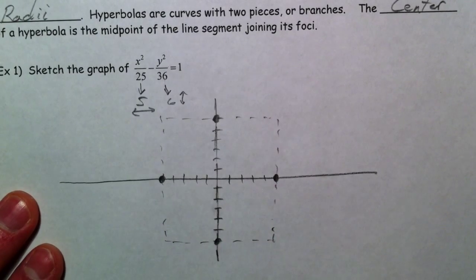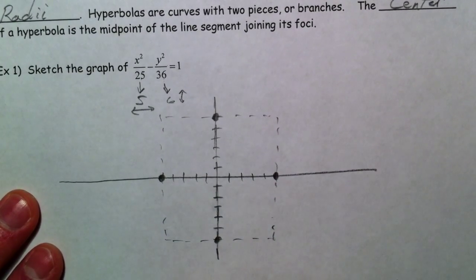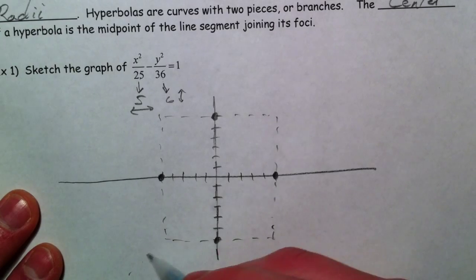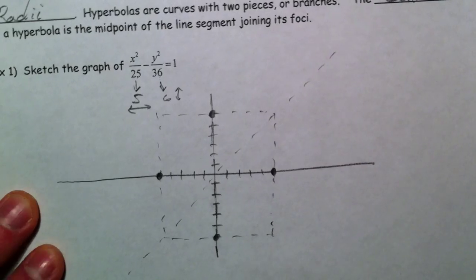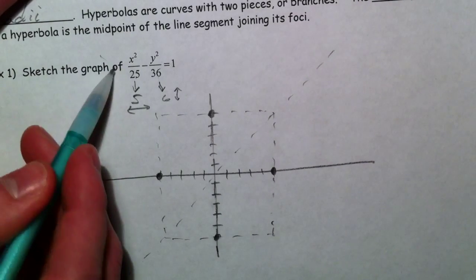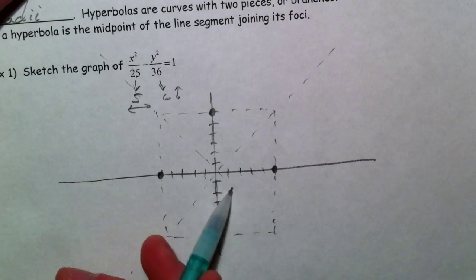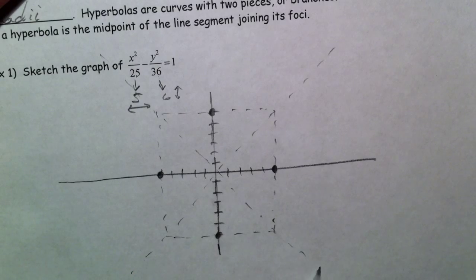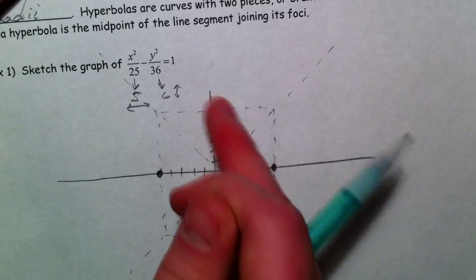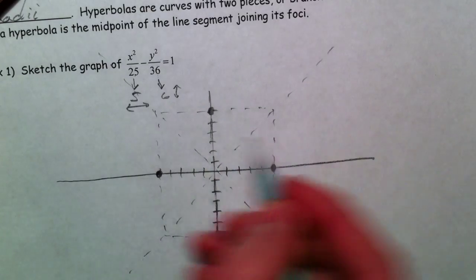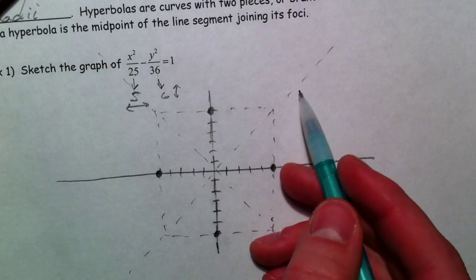And our 6 is telling us to go up and down 6. And so I'm making a box, because hyperbolas have asymptotes, and it helps to graph the box in order to graph the asymptotes, which go through the corners of the box. And so notice the box just is as wide as the 5 and the 5, and as tall as the 6 and the 6. And then I'm drawing diagonals and just extending them.